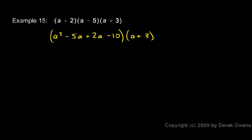Before I do that multiplication, though, I want to simplify this first factor. And I can combine the minus 5a and the plus 2a. And when I do that, I get a squared minus 3a minus 10. And that's multiplied by a plus 3.